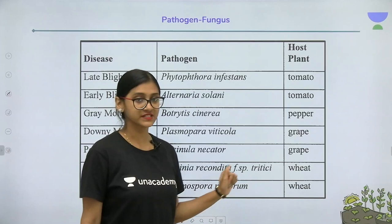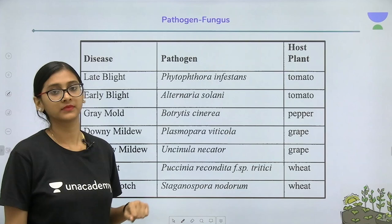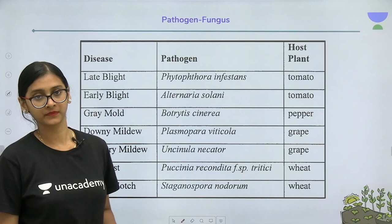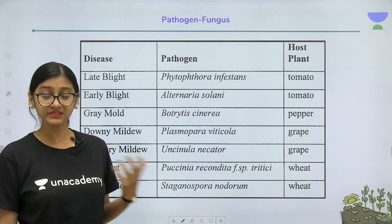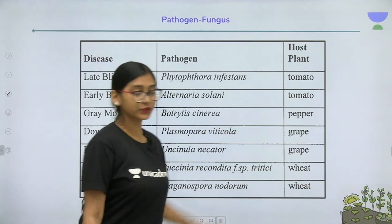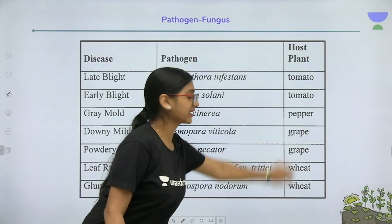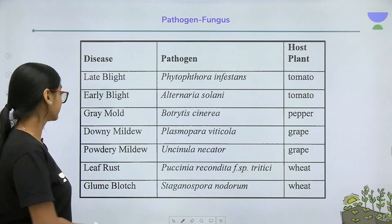Moving to the next pathogen — fungus. Most fungal diseases are airborne or waterborne because fungi produce spores. Smut and rust are airborne diseases. Late blight disease is seen in tomato plants, caused by Phytophthora infestans — this is important. Early blight also occurs in tomato, and gray mold and downy mildew are also notable fungal diseases.